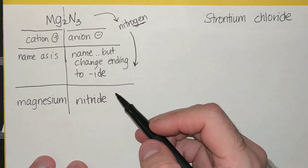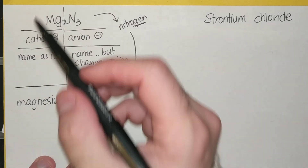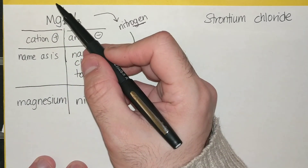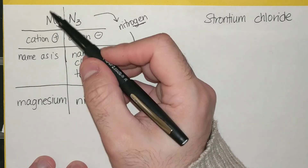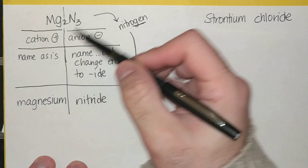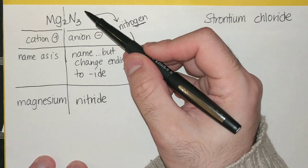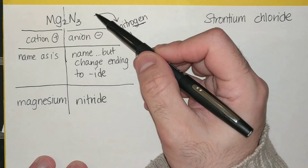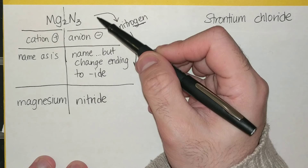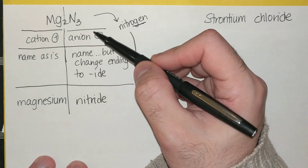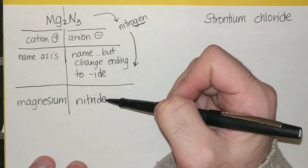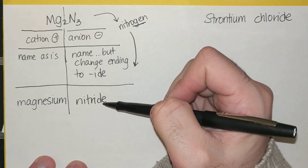Quick recap of that: you name the left side metal or cation as is, and then you name the non-metal, which is always on the right side — the anion — with the ending being IDE.